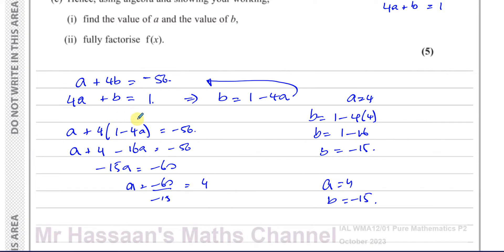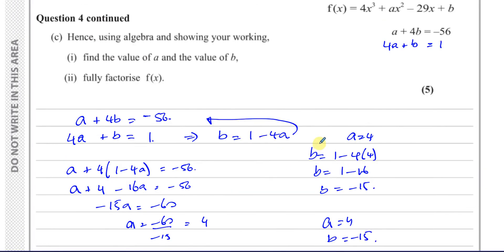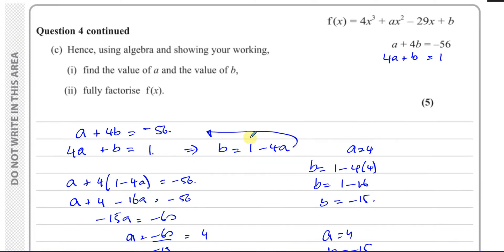We could have also solved this by elimination — multiplying the second equation by 4 to get 16a + 4b = 4, then subtracting the first equation to find a directly. Either substitution or elimination works fine; it's your choice.